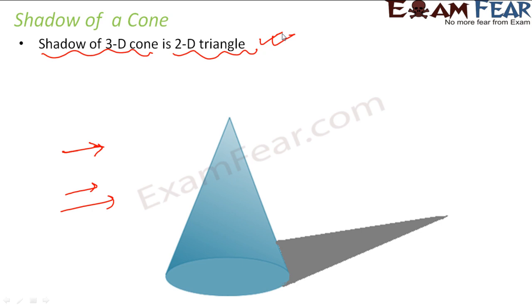So the shadow of a 3D cone is a two-dimensional triangle. Whereas in the previous slide, we saw that had light been coming from the top, in that case the shadow would have been circular. That's because the light is coming from the top. So this circular region is not allowing the light to pass through. So you would get a circular shadow. Depending upon from where the light is coming, you would get a shadow.